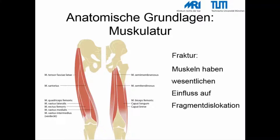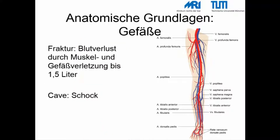Daraus folgt, dass Muskeln einen ganz wesentlichen Einfluss auf die Dislokation von Fragmenten haben, falls es zur Fraktur kommt. Entlang des Oberschenkels ziehen ganz wesentliche Gefäße. Dies bedeutet, dass bei Muskel- oder Gefäßverletzung ein ganz erheblicher Blutverlust auftreten kann.